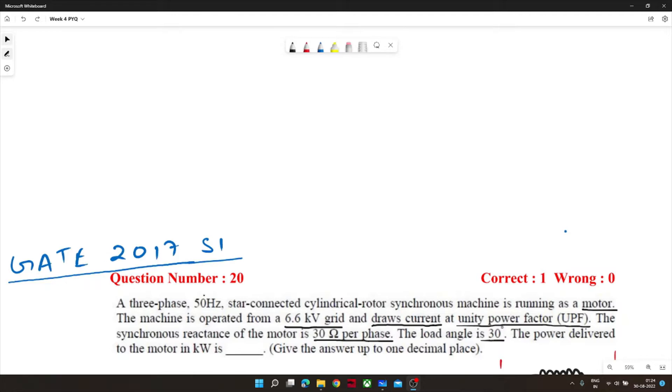Now this machine is operated from a 6.6 kV grid and it draws current at unity power factor, means the motor is operating at unity power factor. It means it is not taking any reactive power from the grid or it is not supplying any reactive power to the grid. So Q_in from this statement we can infer that Q input is equal to zero. This is the second information.